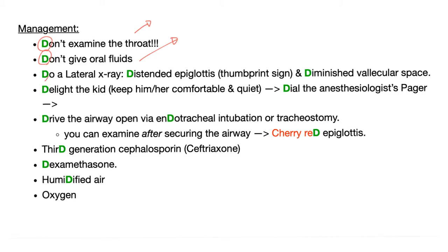You should do a lateral x-ray and you'll find a distended epiglottis — that's the thumbprint sign. You'll also find a diminished vallecula space because the enlarged epiglottis is decreasing the space underneath.